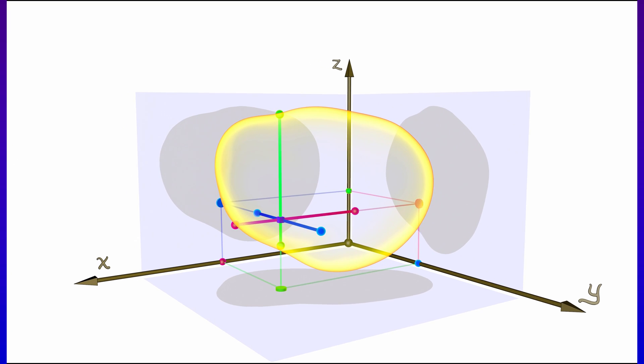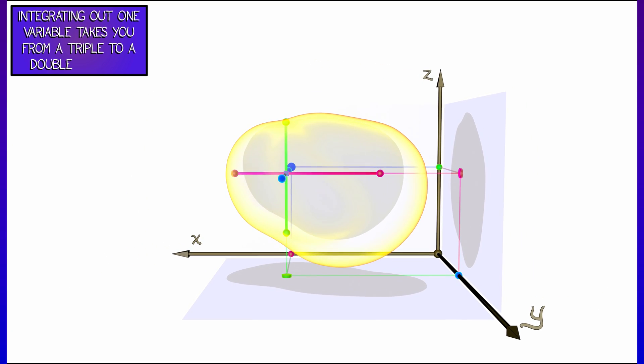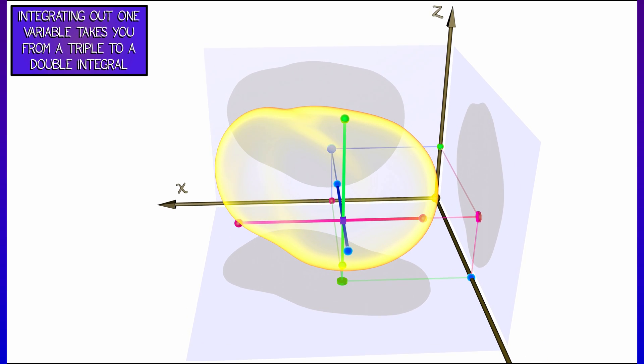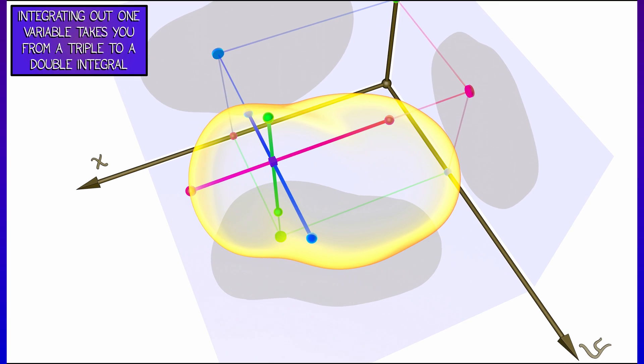The way it works is that given a three-dimensional body that we need to integrate over, what we do is reduce it down to a double integral by choosing one variable.